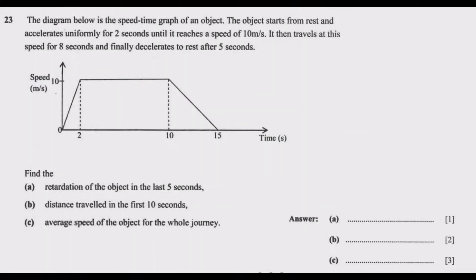The diagram below is the speed-time graph of an object. The object starts from rest and accelerates uniformly for 2 seconds until it reaches a speed of 10 meters per second. It then travels at this speed for 8 seconds and finally decelerates to rest after 5 seconds.